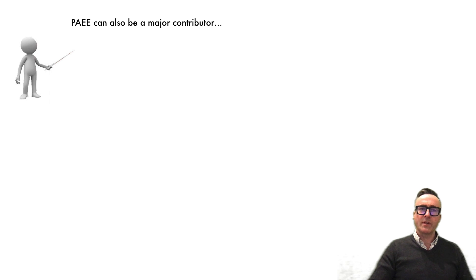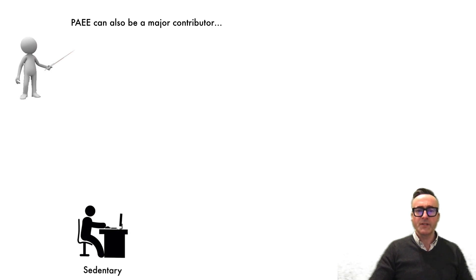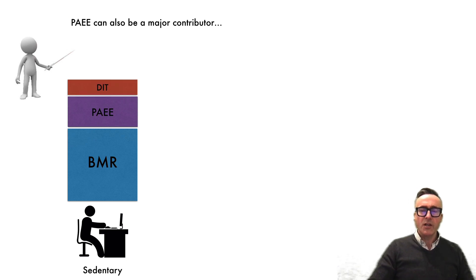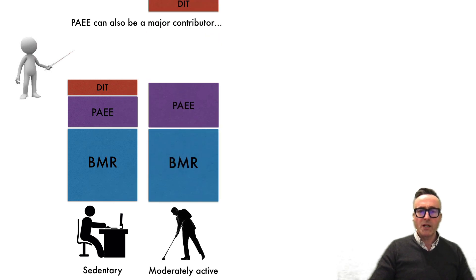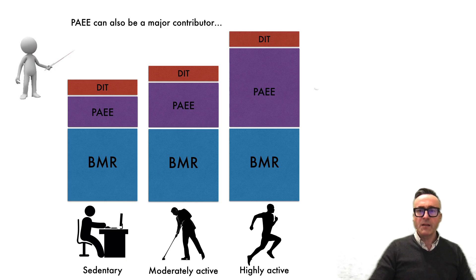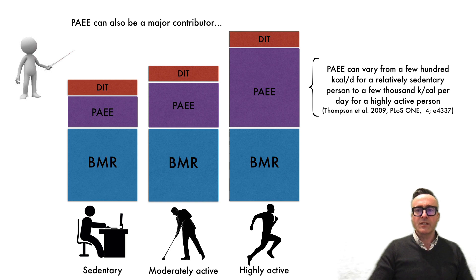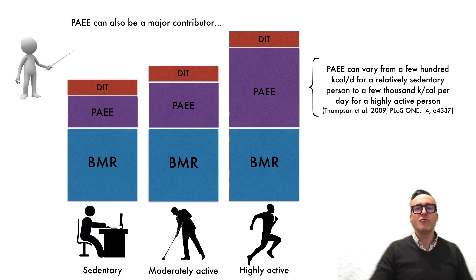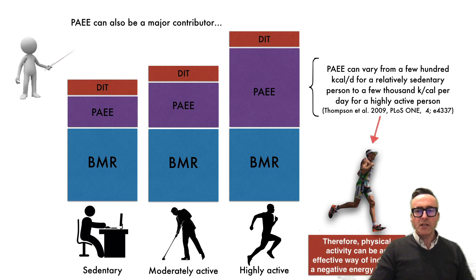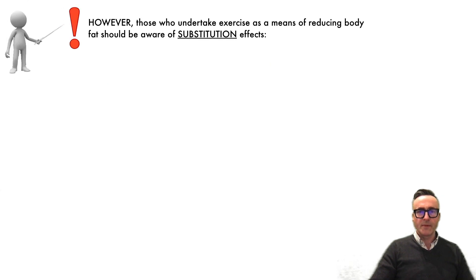Physical activity energy expenditure can be a major contributor to total energy expenditure. Looking at these models, you can see a clear difference between sedentary, moderately active, and highly active individuals. PAEE can vary from a few hundred calories for a sedentary person to a few thousand calories per day for an elite or highly active athlete. Physical activity can therefore be an effective way of inducing a negative energy balance, primarily in very active groups.